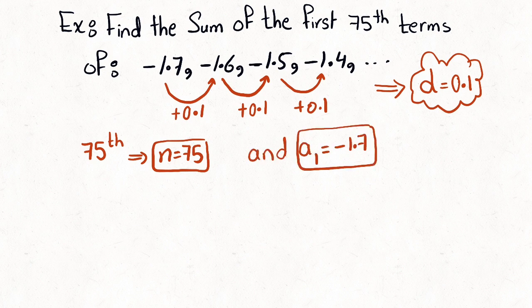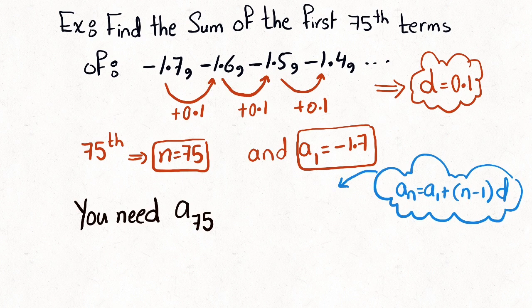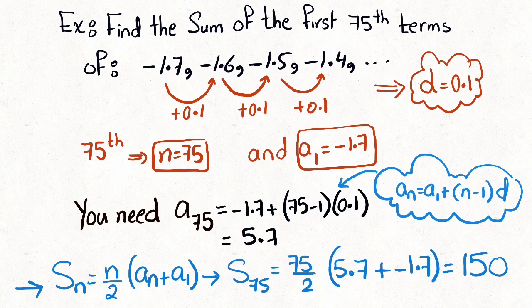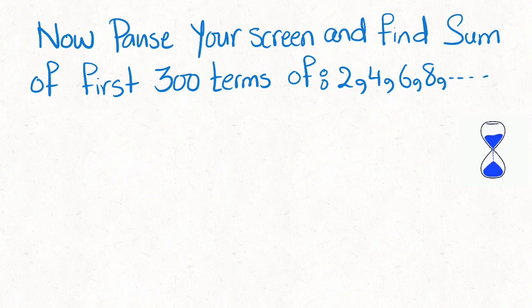First, find a75 by applying a_n = a1 + (n − 1) × d. After finding a75, use the sum formula: S_n = (n/2) × (a1 + a_n) to find the total sum.